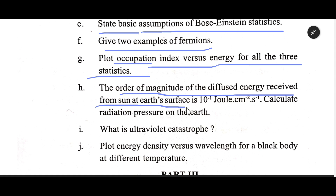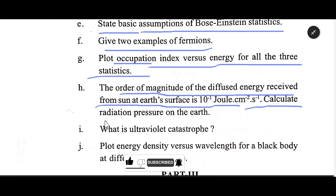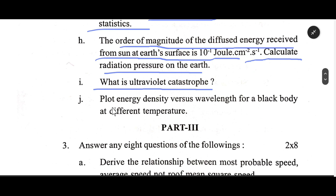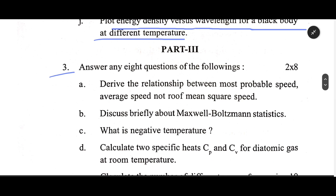The order of magnitude of the diffuse energy received from the sun at the Earth's surface is 10⁻¹ joule per centimetre square per second. Calculate the radiation pressure on the Earth. What is the ultraviolet catastrophe? Plot energy density versus wavelength for a black body at different temperatures.